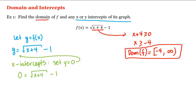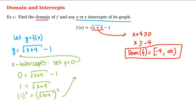Adding 1 to both sides, we get 1 is equal to the square root of x plus 4. Then squaring both sides, we have 1 squared is equal to the square root of x plus 4 squared, or 1 is equal to x plus 4. Subtracting 4 from both sides gives us x is equal to negative 3. So the graph of f does have an x-intercept.